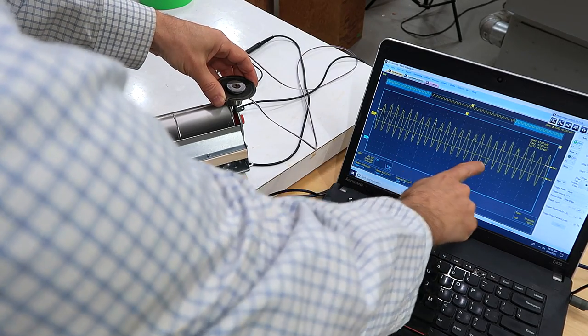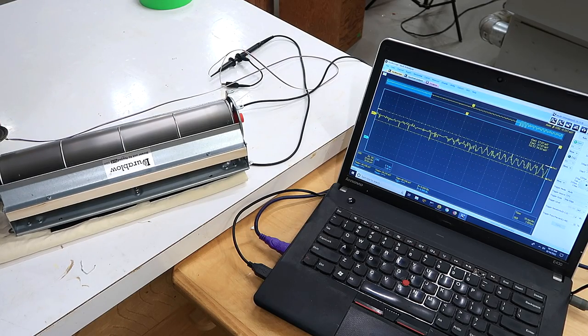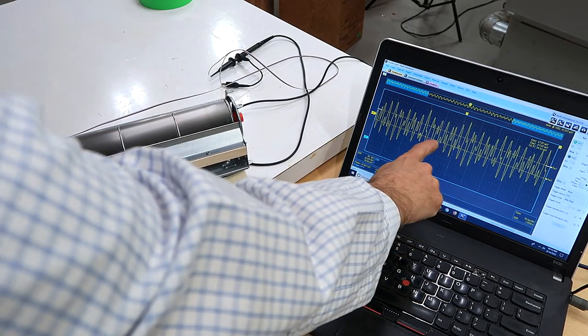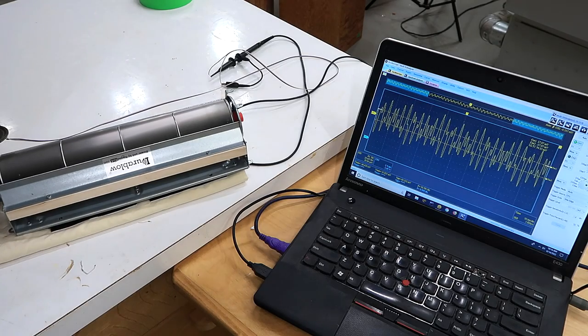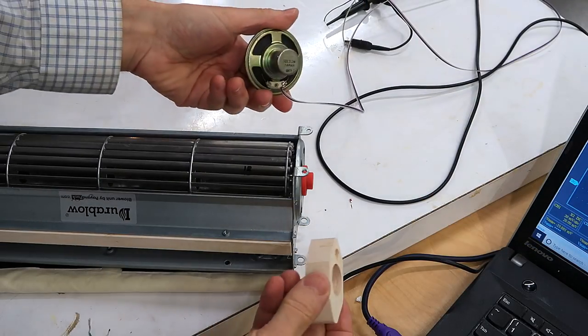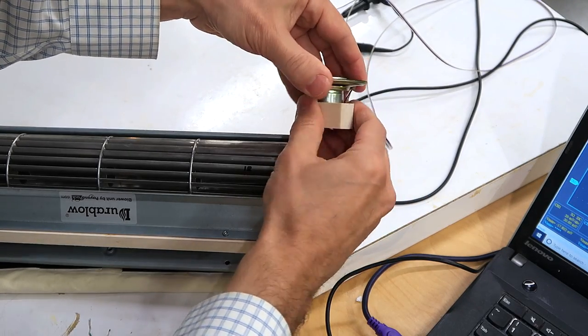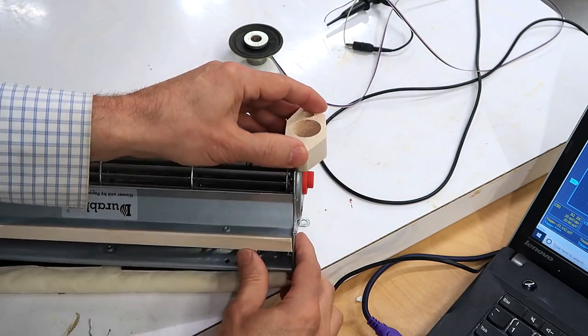So I'm clearly picking up vibrations from this thing here just by holding it on here, and also on this end although those vibrations are much more complicated. I want to be more consistent with how I hold that speaker on there, so I made this little bracket that the speaker fits into that I can just screw on there.